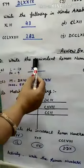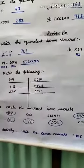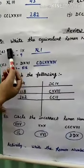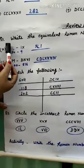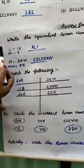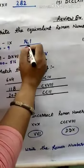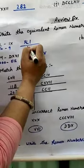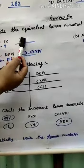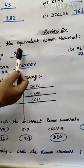Review Exercise, Question 1: Write the equivalent Roman Numeral. Looking at the given symbol — L stands for 50. Subtracting 9 from 50 gives 41. To write 41 in Roman Numerals: XL for 40 (X subtracted from L on the left side) and then I for 1, giving XLI.